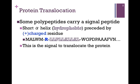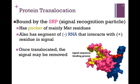This is the signal to translocate the protein. The signal is recognized by a specific protein called the signal recognition particle, or SRP. In the figure on the lower right, the SRP protein in surface model is highlighted in pink. It has a pocket, highlighted in yellow, of mainly methionine residues, and these methionine residues will readily associate with all of the leucines in our hydrophobic helix through van der Waals forces.